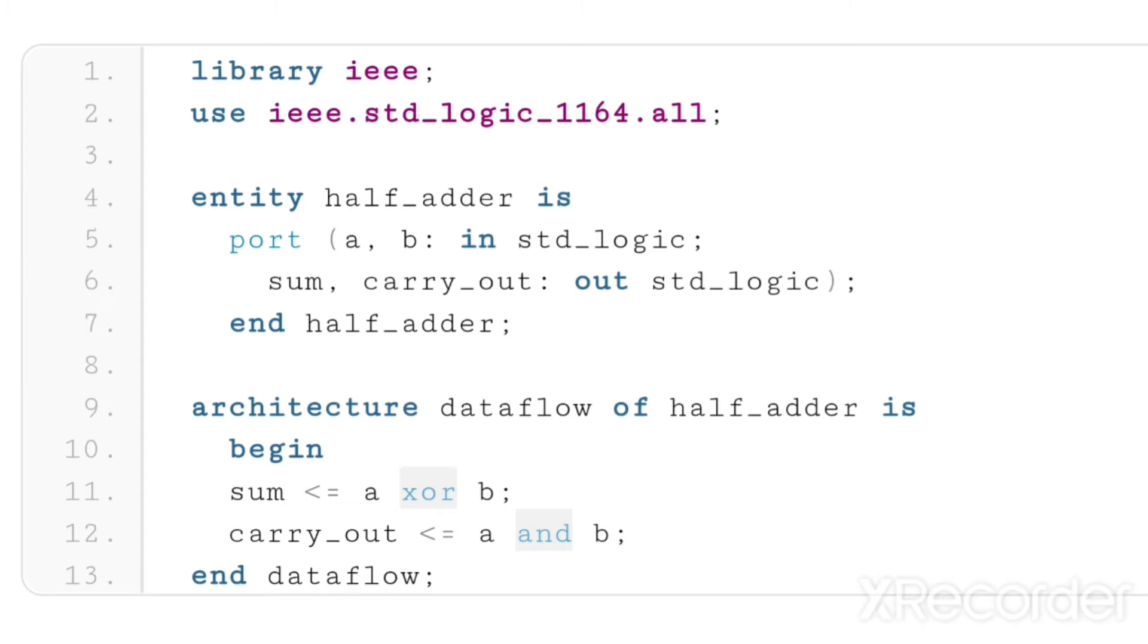In place of std_logic, you can write bit also. If we represent it as bit, A and B can take only 0 and 1. That is the difference between std_logic and bit.